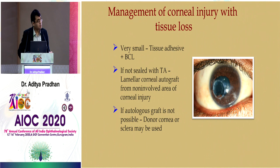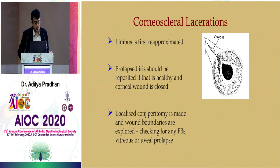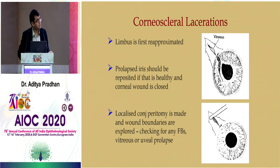If there is tissue loss, you may need a patch graft. For scleral wounds — which are a different entity — start from the scleral wound, oppose the limbus, and then come to the cornea.